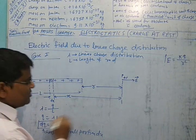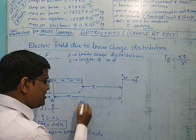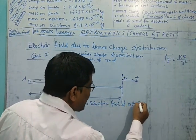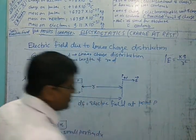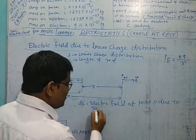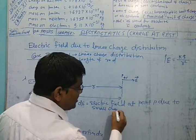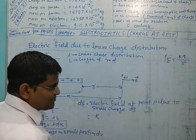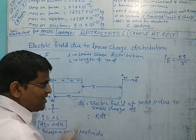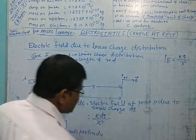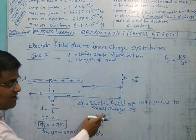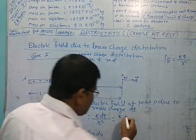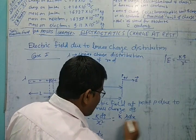Using the symbol DE for the electric field at point P due to small charge DQ: DE equals K times DQ times 1 (unit charge) divided by X squared, which gives K times DQ divided by X squared. Substituting DQ equals lambda times DX, we get DE equals K times lambda times DX divided by X squared.